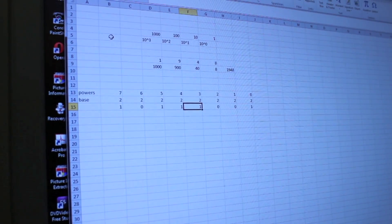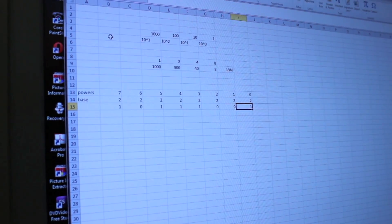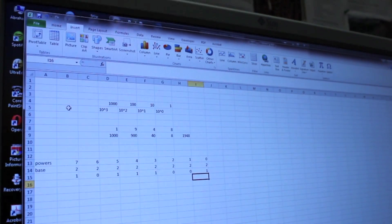One, zero, one, one, one, zero, zero, one, that's a perfectly good binary number, but what is it in base ten that you and I are familiar with?